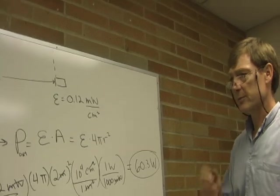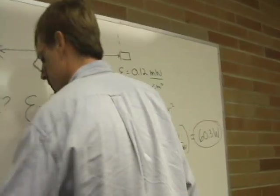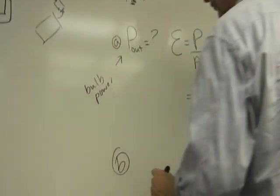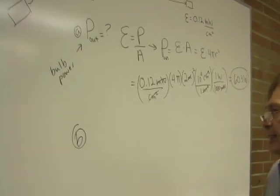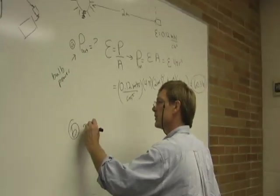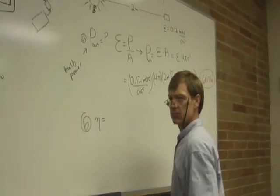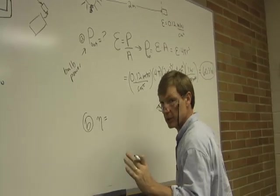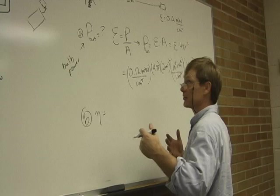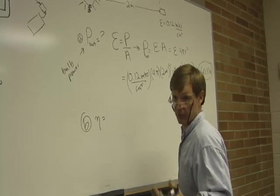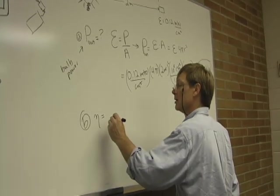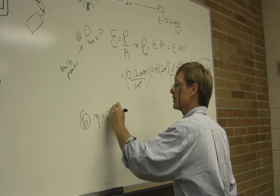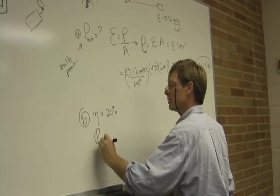So my next question is B. Let's say the efficiency is 20%. 20% of the energy I put in actually comes out as light. The rest is waste, heat, and rays we can't see. So let's say 20% efficiency. And I want to know, what's the input power?